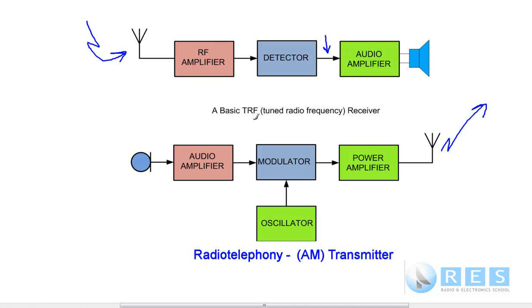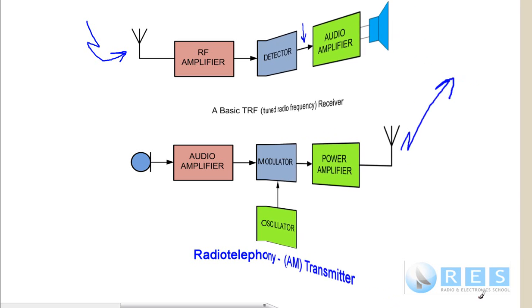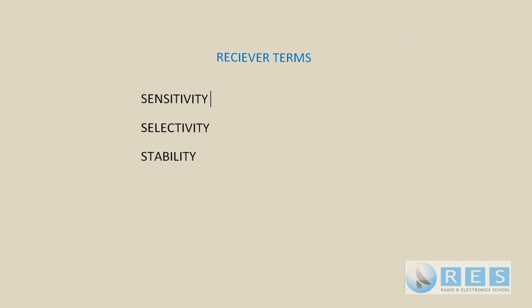That's a tuned radio frequency receiver, a TRF receiver, and that's the only one you need to know for your foundation license. You don't need to know any other block diagrams for your foundation. However, you do need to know about some receiver terms.